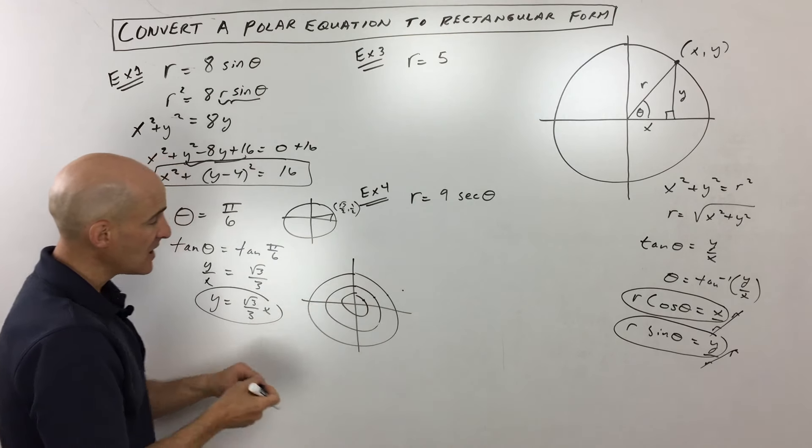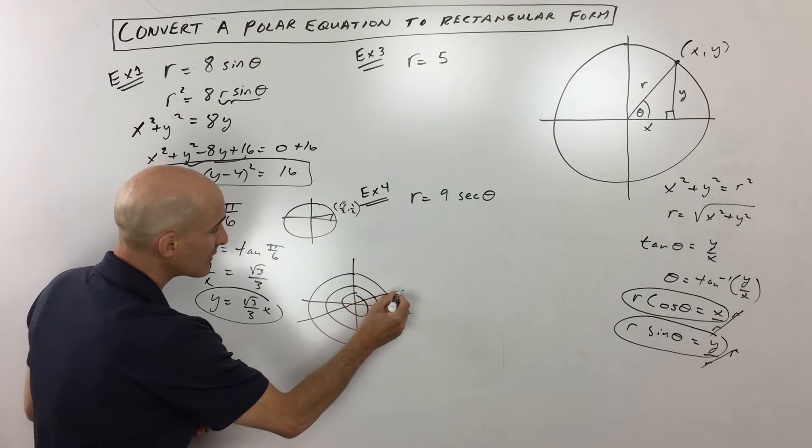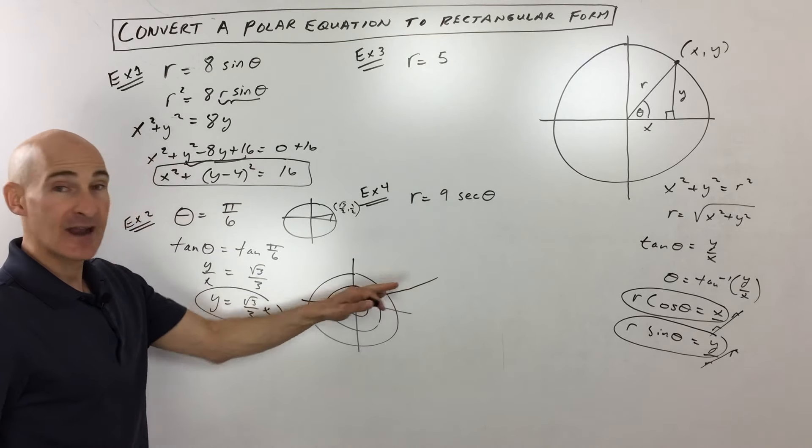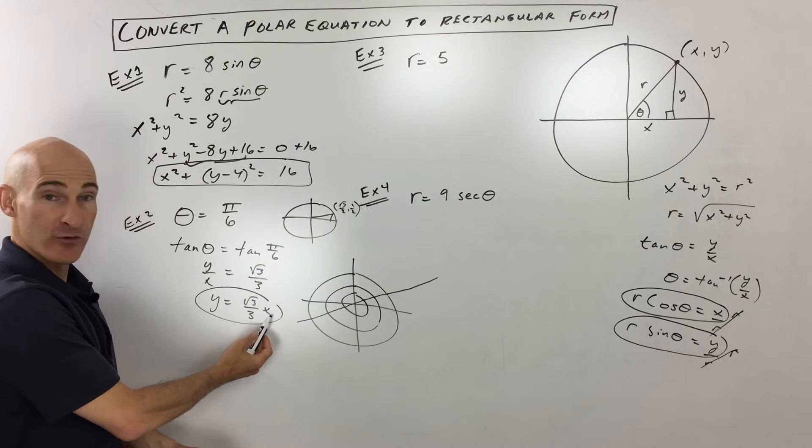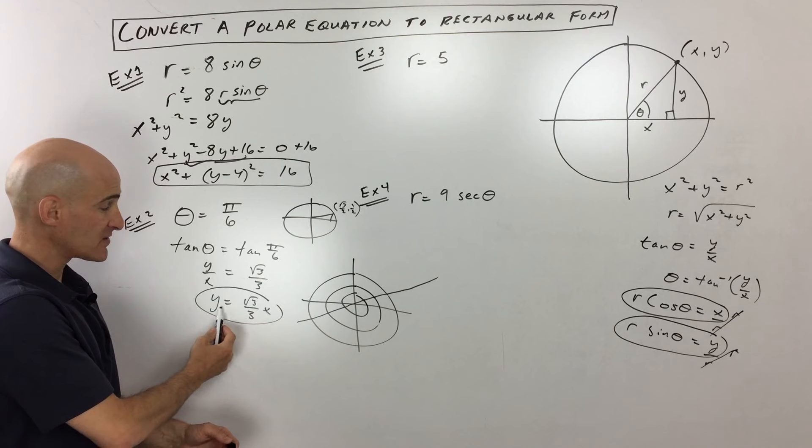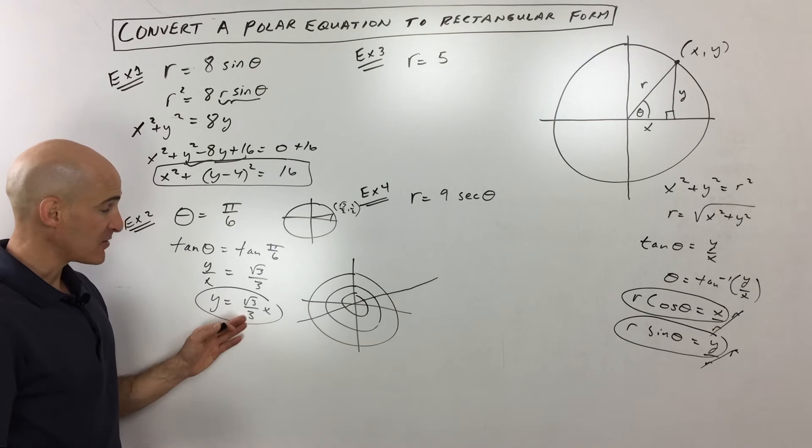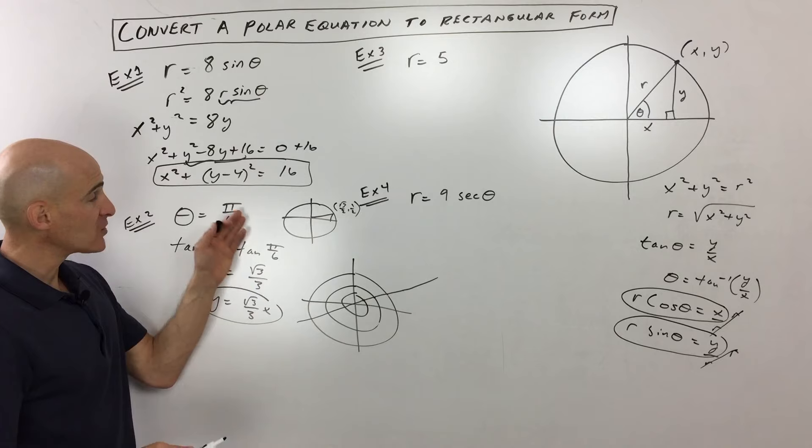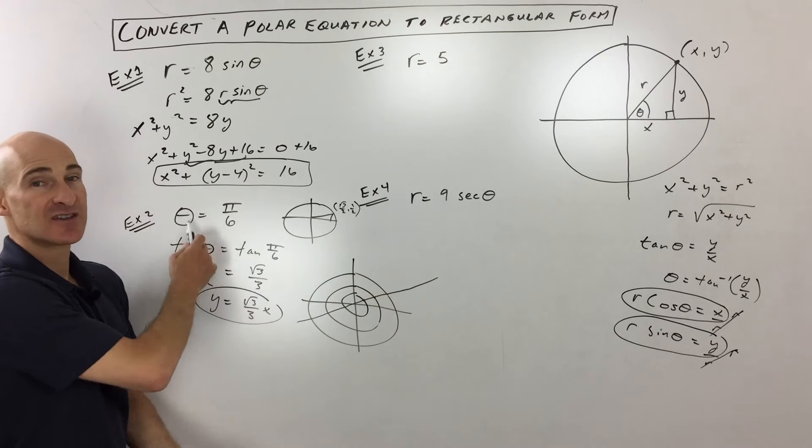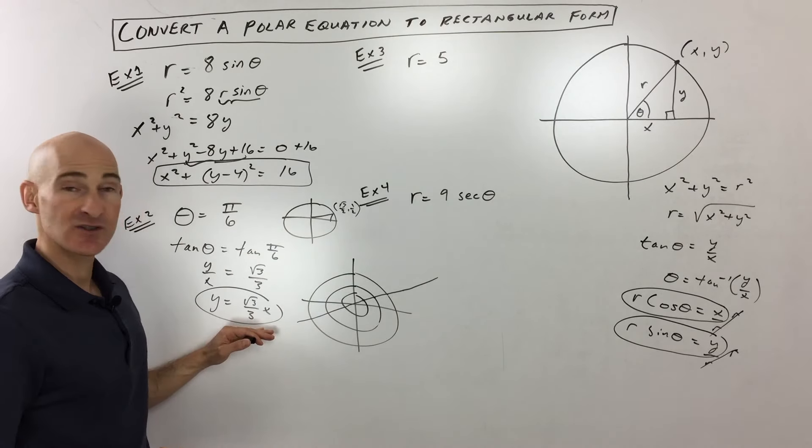And so you can see what we're getting is a line when we connect those points, and that line has a slope of square root three over three. So that's where this equation is coming from. It's like y equals mx plus b. The slope, the m, is square root three over three. So both of these equations represent the same line, it's just that this is in polar and this one here is in rectangular.